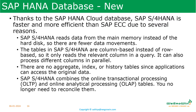Now let us discuss the new things in S4HANA. Thanks to the S4HANA HANA cloud database, SAP S4HANA is faster and more efficient than SAP ECC. It reads data from main memory instead of disk, so there are fewer data movements. Tables in S4HANA are column-based instead of row-based, so it only reads the relevant column in a query and can process different columns in parallel. There are no aggregate, index, or history tables, and S4HANA combines OLTP and OLAP tables so you no longer need to reconcile them.